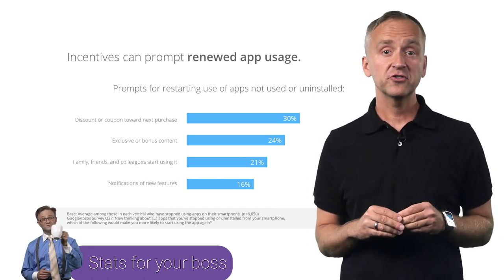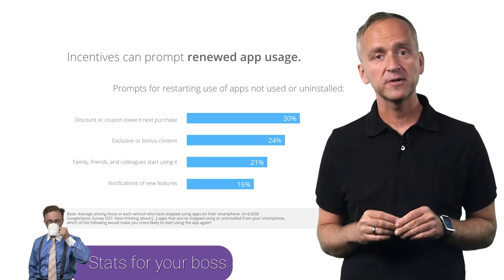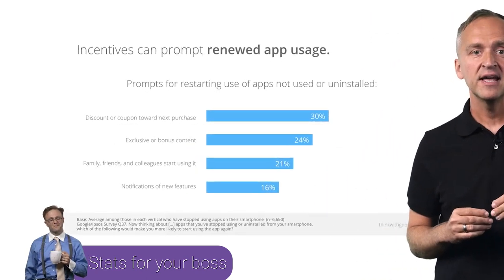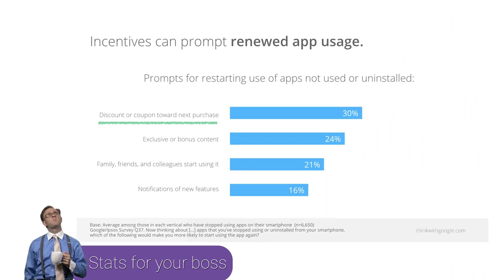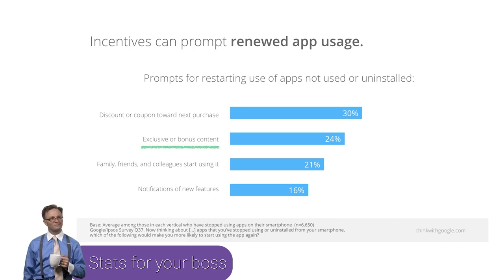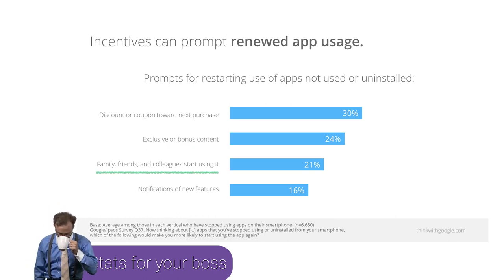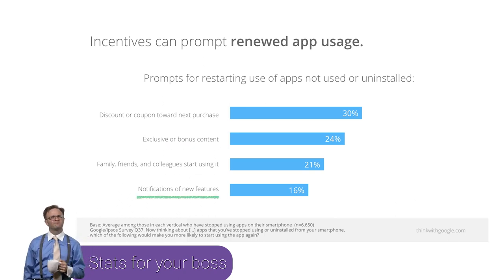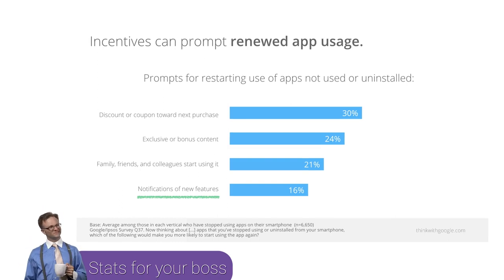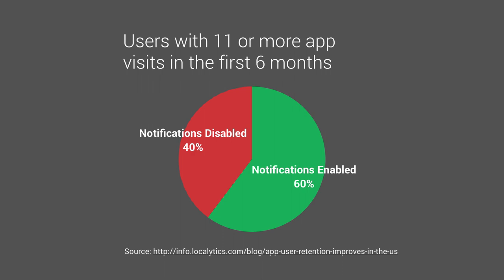So how can you entice your users to get back into your app? User research shows that notifications work very well. Sending a notification to the user with a discount or a coupon, a deep link to bonus content, a friend or family update, or a cool new feature announcement are all great ways to get continued engagement for your app.